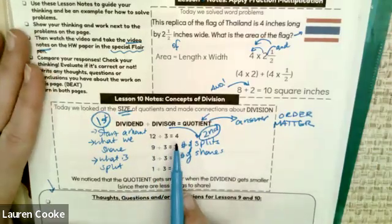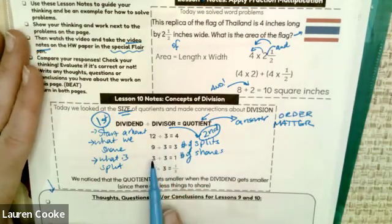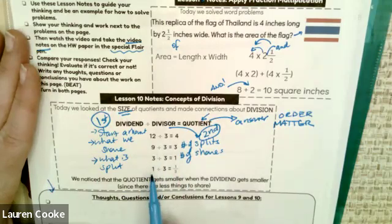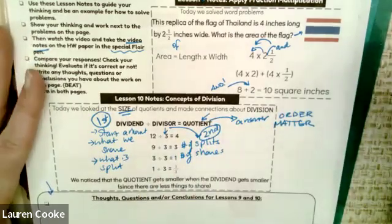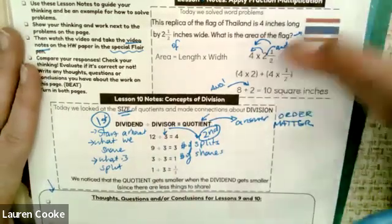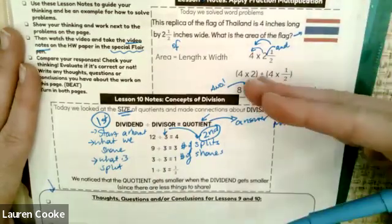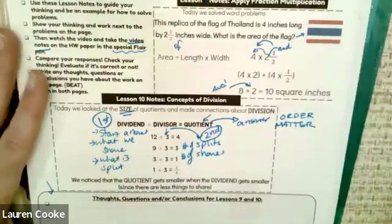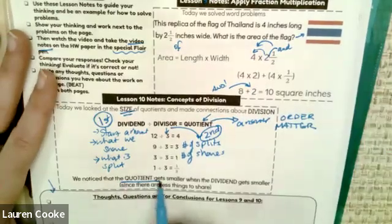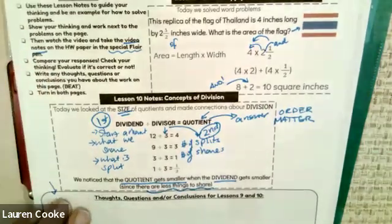Order absolutely matters for division and subtraction, but multiplication and addition, it doesn't. So let's see what happens. We have 12 divided by 3, we know that's 4. Nine divided by 3 is 3. Look what's happening to the dividend. My dividend, the amount I'm starting with, it's getting smaller and smaller, but my divisor, what I'm splitting it by, is staying exactly the same. So if I'm splitting it into the same number of piles, sharing it with the same number of people, but the amount that I'm starting with is getting smaller and smaller, my quotient is going to get smaller and smaller. We notice that the quotient gets smaller when the dividend gets smaller, less things to share.